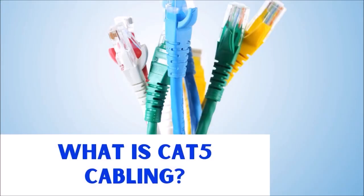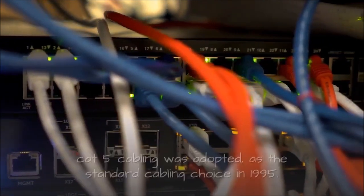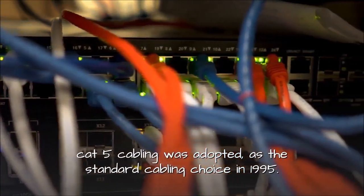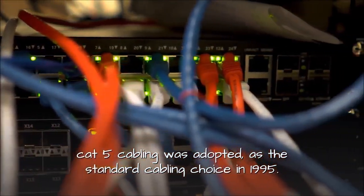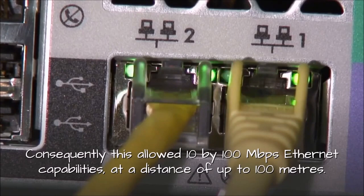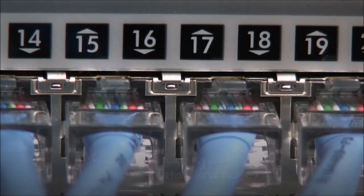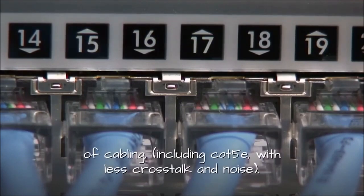What is CAT5 cabling? One of the older categories of copper wire data cables, CAT5 cabling was adopted as the standard cabling choice in 1995. Consequently, this allowed 10 by 100 megabits per second ethernet capabilities at a distance of up to 100 meters. However, this has now been surpassed by several other categories of cabling, including CAT5e with less crosstalk and noise.